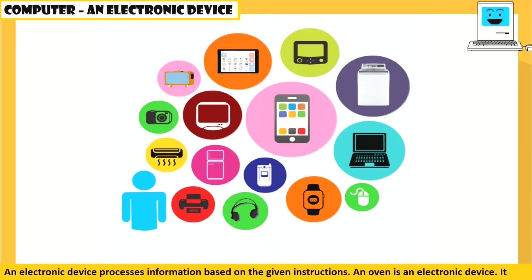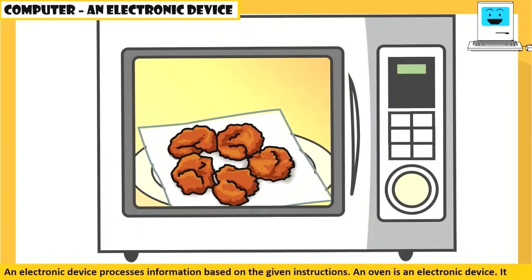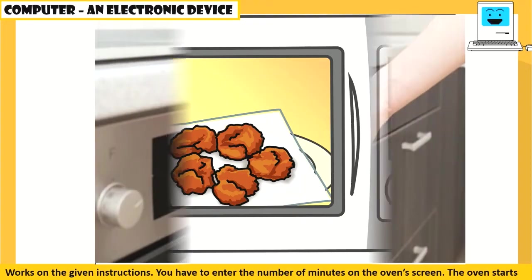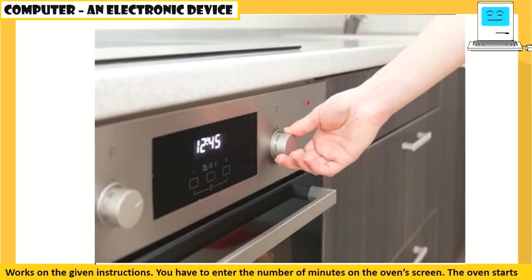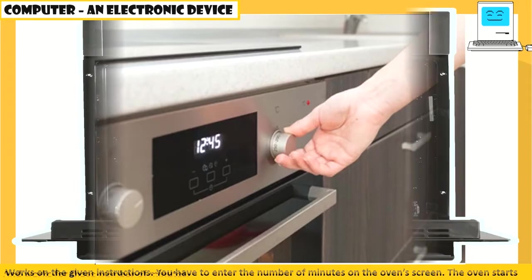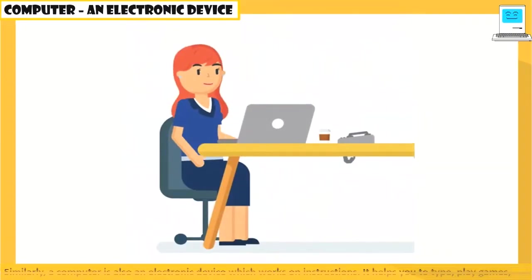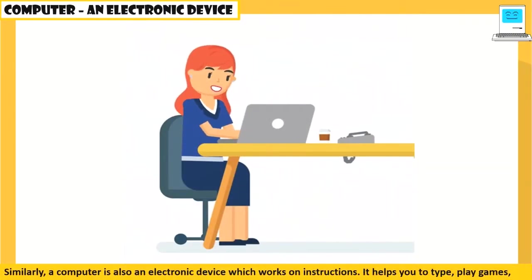An oven is an electronic device. It works on the given instructions. You have to enter the number of minutes on the oven screen. The oven starts and works for those number of minutes.